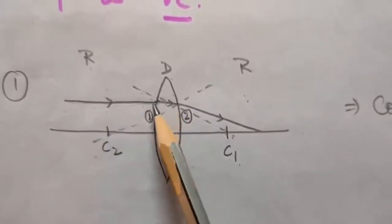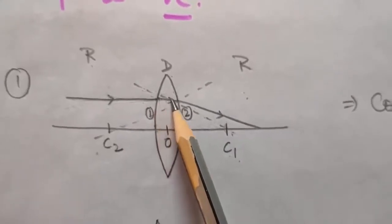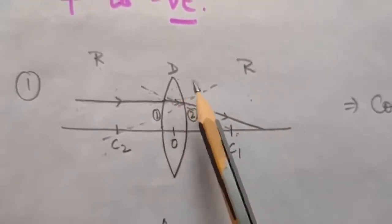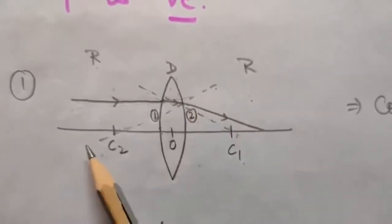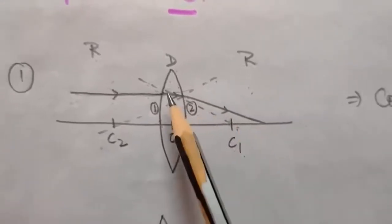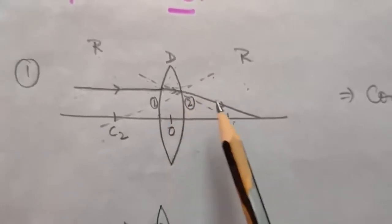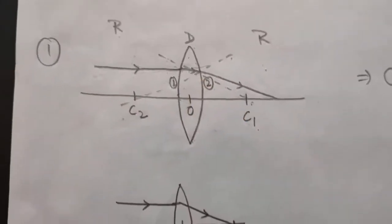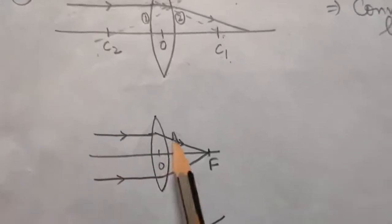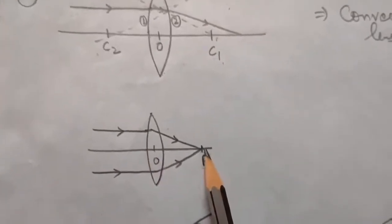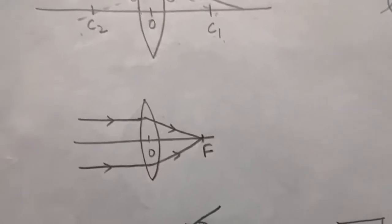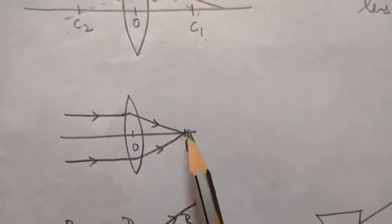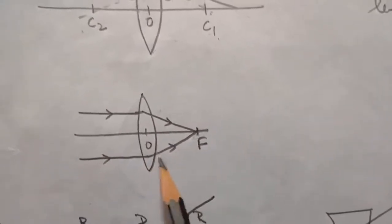When the ray goes from rare to denser it bends towards normal, and at the second surface from denser to rarer it bends away from normal. Collectively, this convex lens makes parallel rays converge to a point. Taking two parallel rays, they bend and meet at the focus. Since this focus is in the direction of incident light, the focal length of a convex lens is always positive.